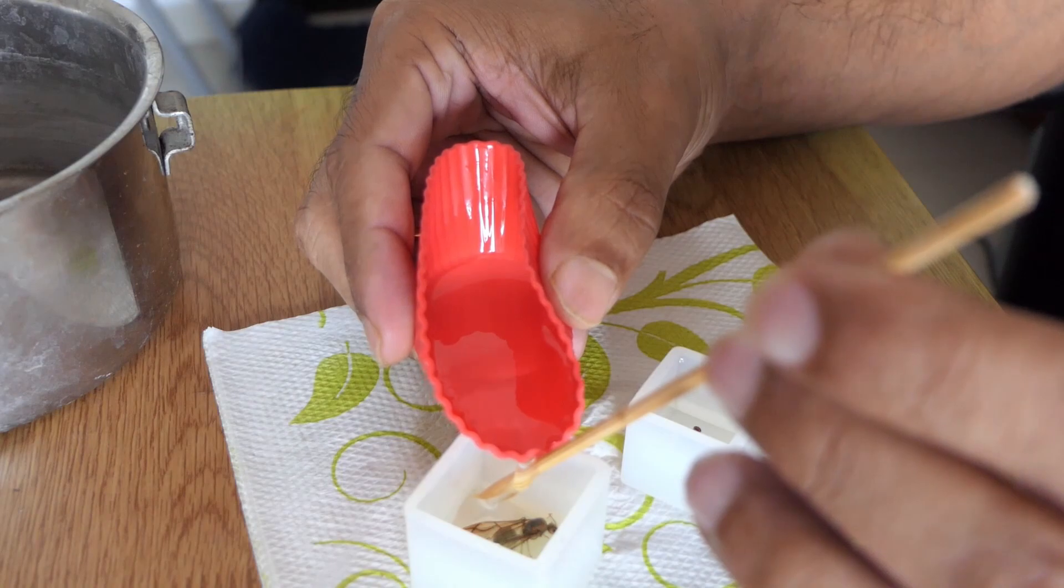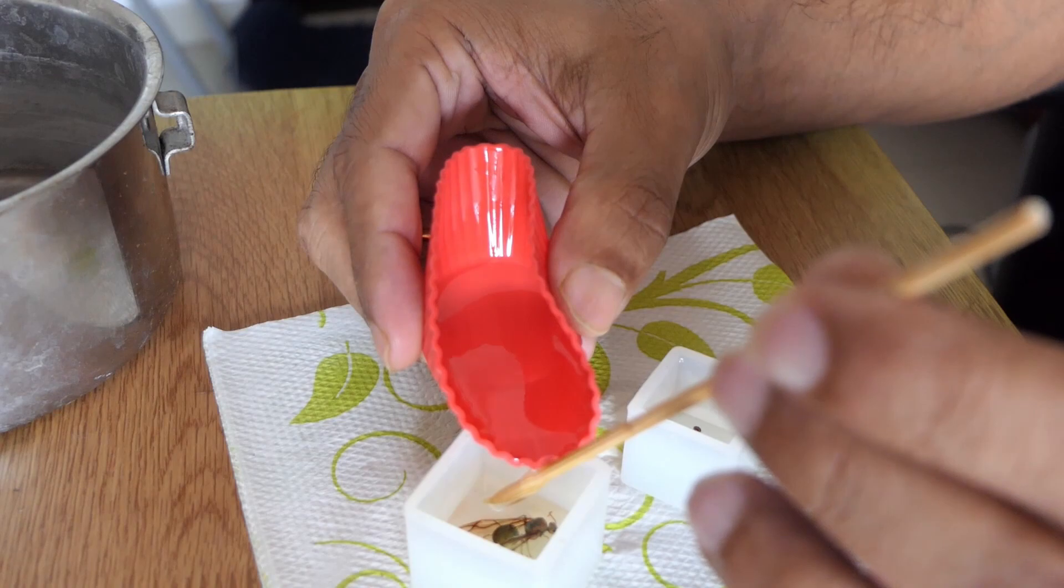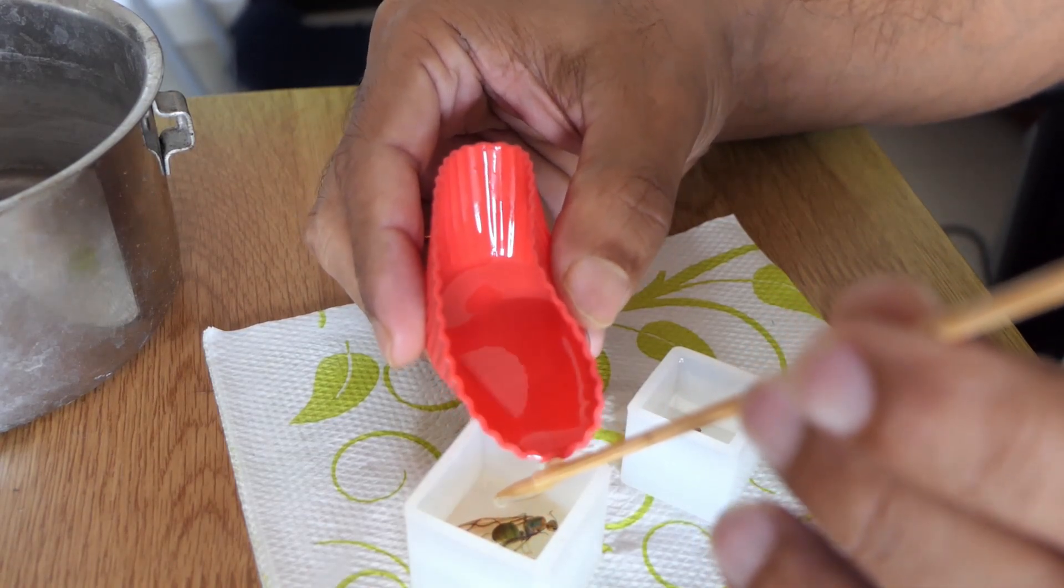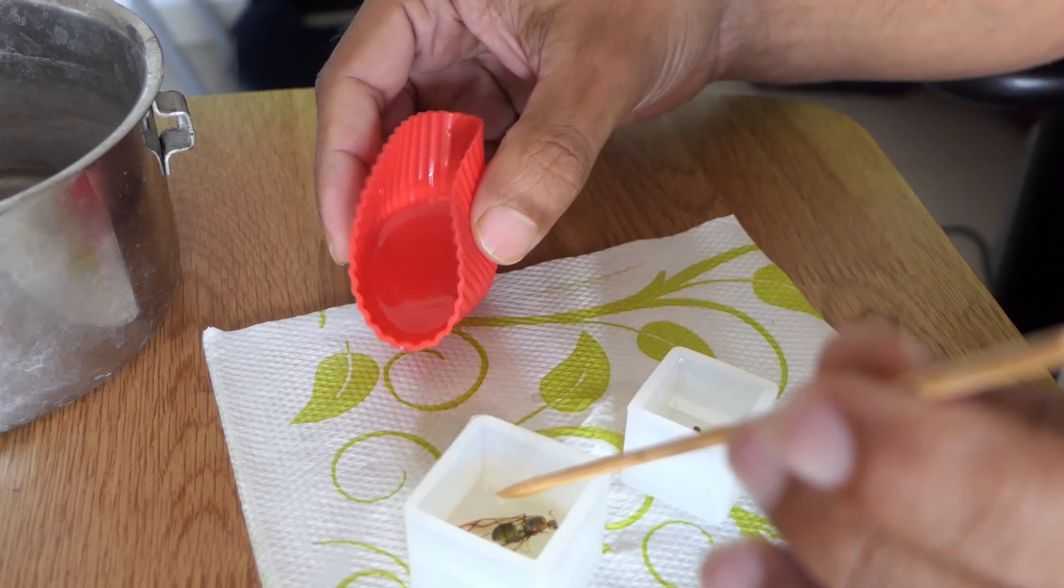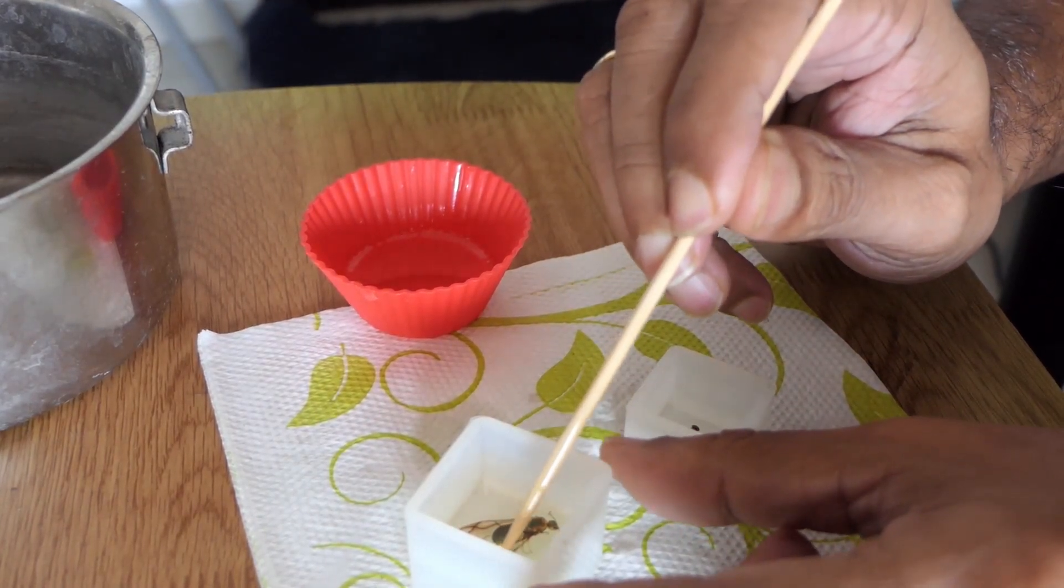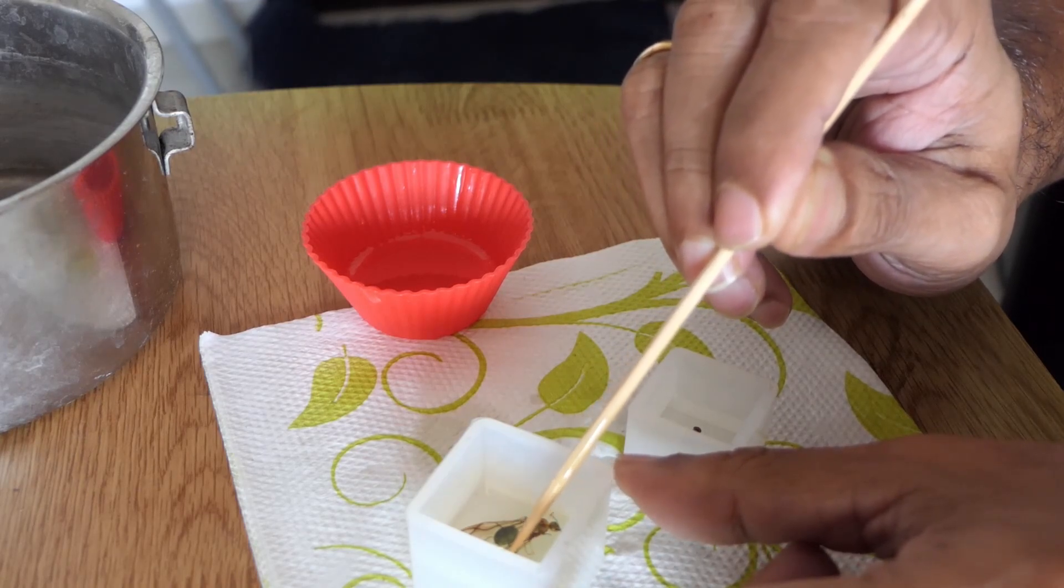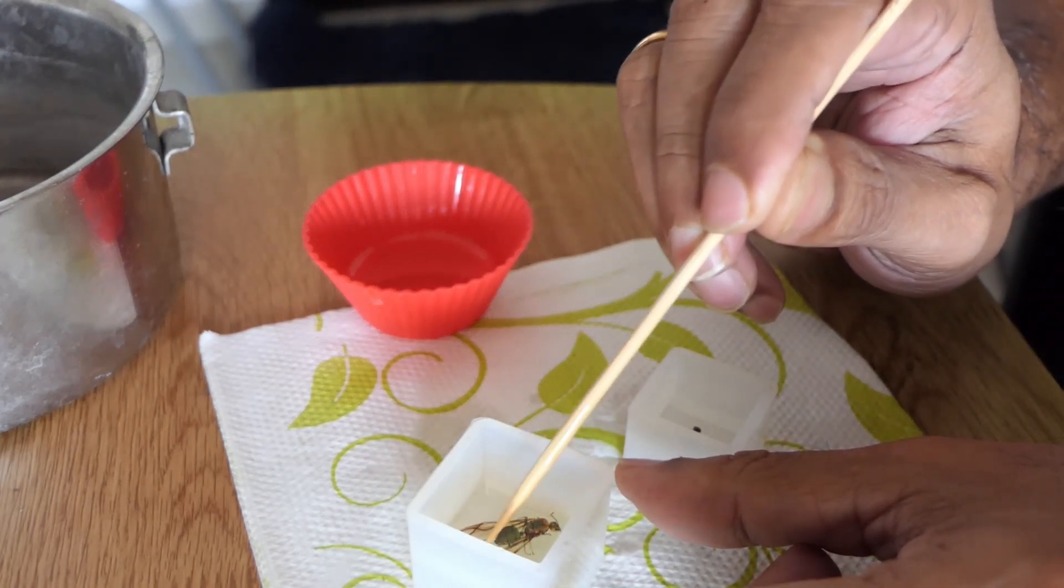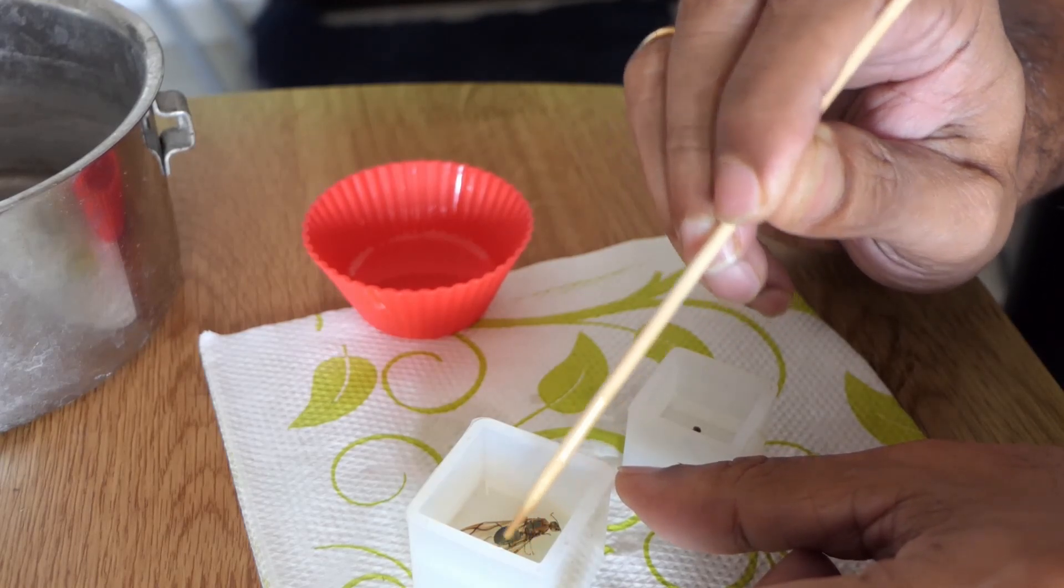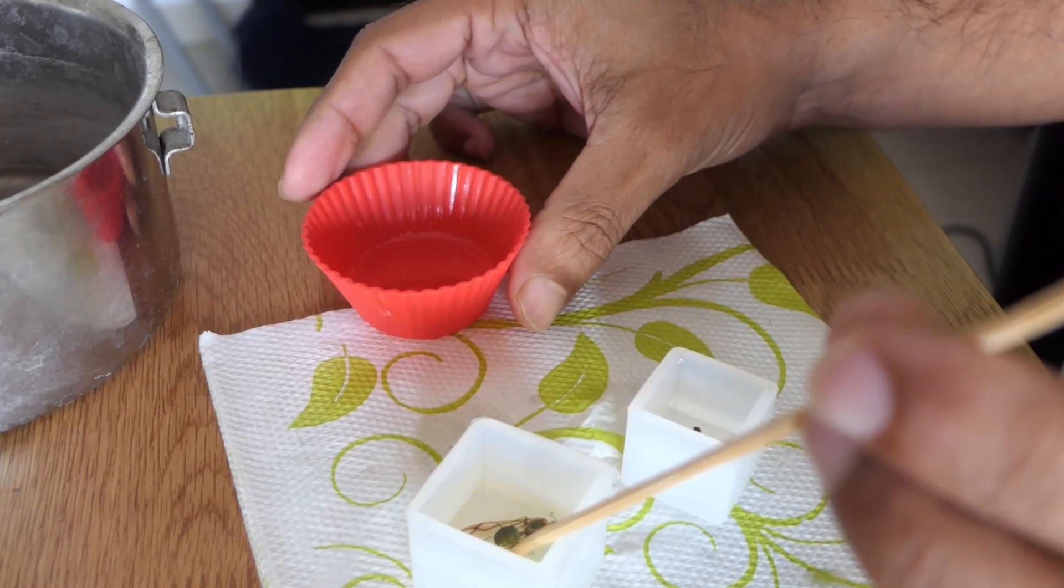I'll use this toothpick to pour the resin. The important part is not to get any air bubbles stuck under the insect. Because of the heat, the resin is still liquid enough and hopefully that will not trap too much air bubbles anywhere. Even the air bubbles that come out of the ant, you know, because air tends to get trapped in the spiracles and so on, they get released when we pour the resin.